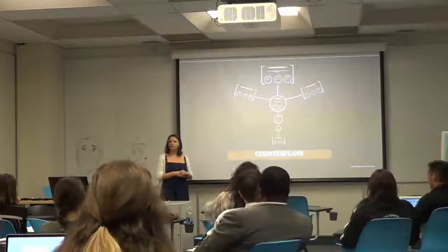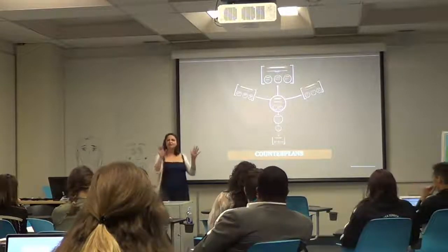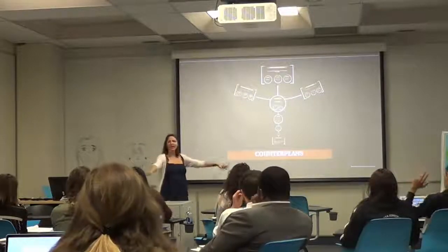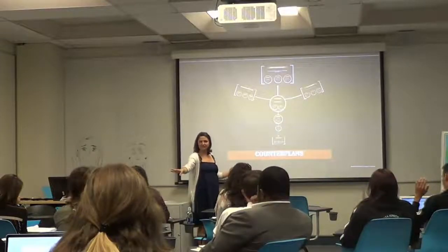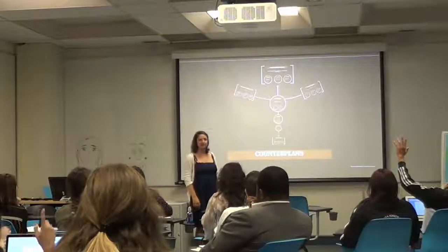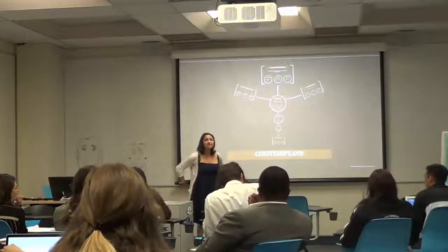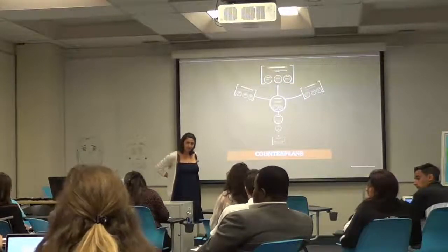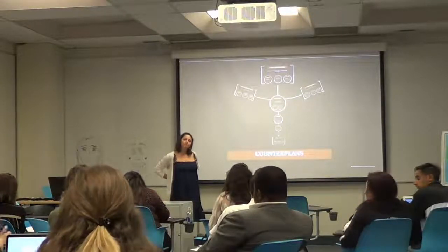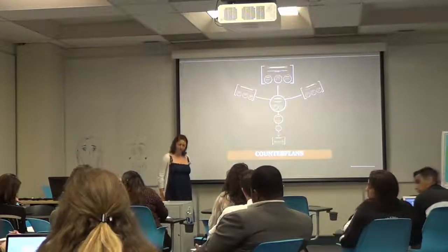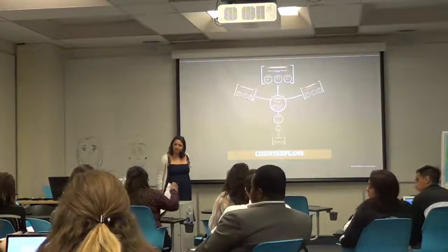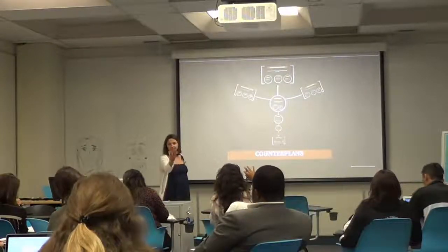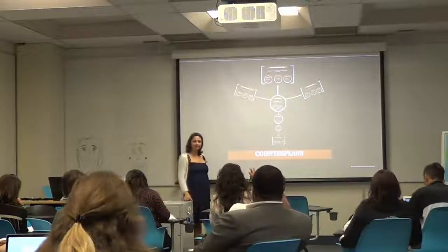That's my introduction to counter plans. I know that was a lot of information. We have seven minutes for questions — about counter plans or topicality. A process counter plan is where you do the same thing as a plan except you use a different way — not a different agent, but a different mechanism. An example is going through the president via executive order instead of having Congress pass a law. They're both using the same agent, the U.S. federal government, but going through a different process within that agent. Another example: campaign finance reform — Congress could pass a bill to combat Citizens United, or the Supreme Court could take another test case and overturn the original Citizens United decision. Those are two different tracks of solving the same problem using different processes within the U.S. federal government.